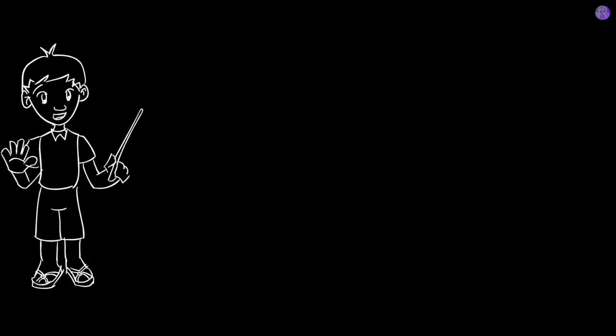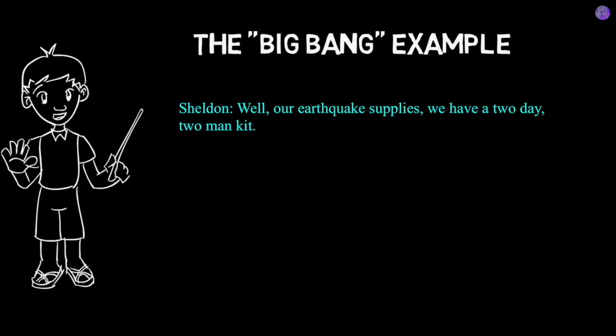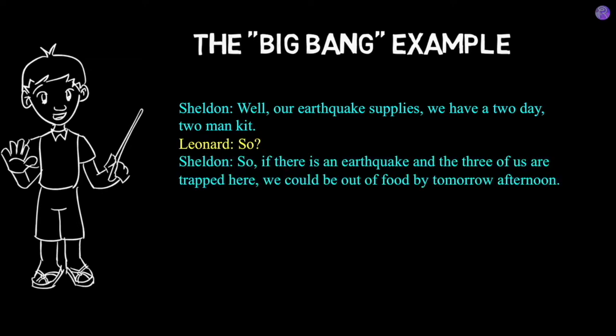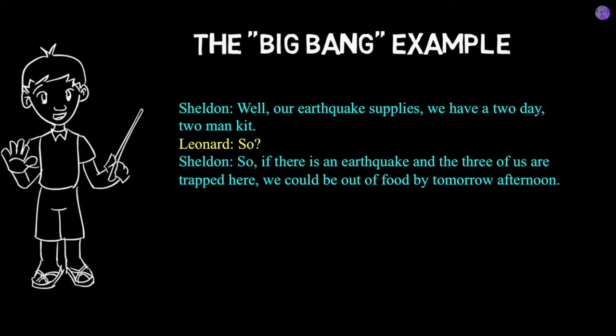Now with these definitions and examples in mind, let's take a look at that Big Bang Theory episode again. Sheldon says their earthquake supplies are a two-day, two-man kit, so if there's an earthquake and there are three of them present, they could be running out of food by tomorrow afternoon. At this point, Sheldon's logic is completely sound — he is making a valid argument. His premise is declarative and factual, and his conclusion is logical.